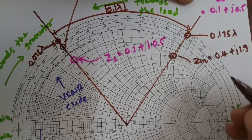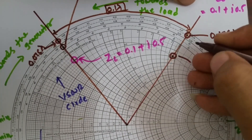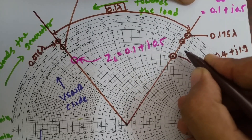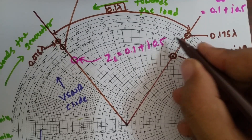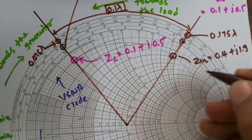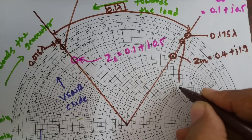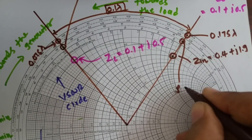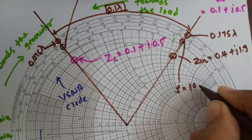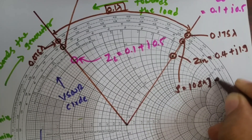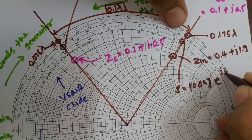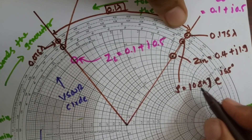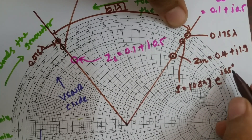For the value of reflection coefficient at the input, we look at the angle at this point. The angle is between 50 and 60 degrees, approximately 55 degrees. The magnitude of reflection coefficient is 0.84 at an angle of 55 degrees.